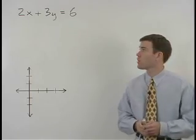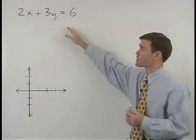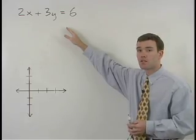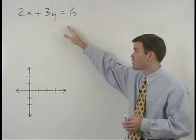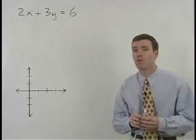To graph the line that has the equation 2x plus 3y equals 6, we would first convert the equation to slope-intercept form.